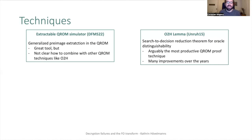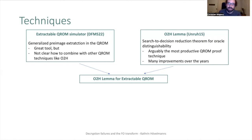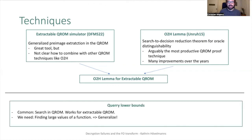On the technical side, we faced the problem that two existing techniques — an extractable quantum random oracle model simulator and the so-called One-Way to Hiding lemma — cannot naively be combined in the way we wanted. So we opened the black boxes and proved a new One-Way to Hiding lemma for the extractable quantum random oracle model. Additionally, to characterize the behavior of public key encryption schemes with decryption errors under derandomization, we needed query lower bounds for a task related to but not exactly search: finding input-output values of the random oracle that evaluate to large values under some predicate function.